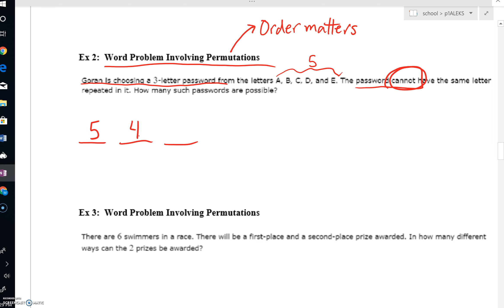Likewise, you've now chosen another letter. You no longer have four choices. Now you're down to three. And very quickly, you could say five times four, which is 20. 20 times three is going to be 60. There would be 60 passwords that could be created.